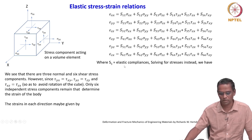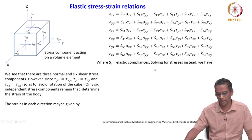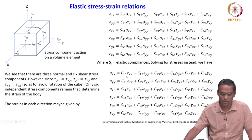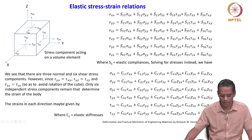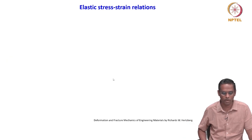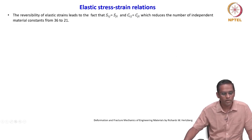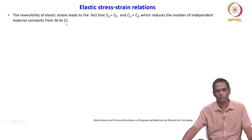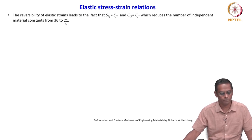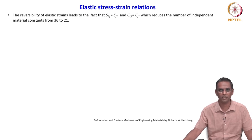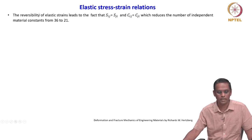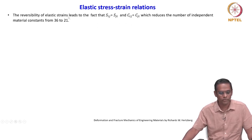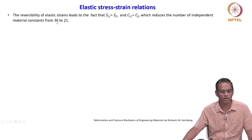These are called elastic compliances, and you can express the same thing for stresses in terms of Cij, the elastic stiffness. The reversibility of elastic strain leads to the fact that Sij equals Sji, and similarly Cij equals Cji, which reduces the number of independent material constants from 36 to 21.